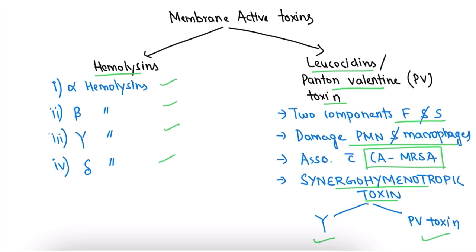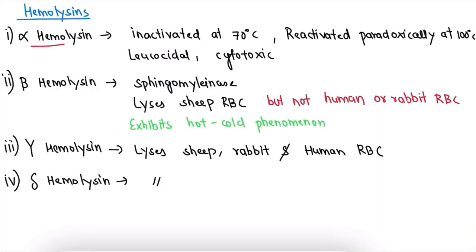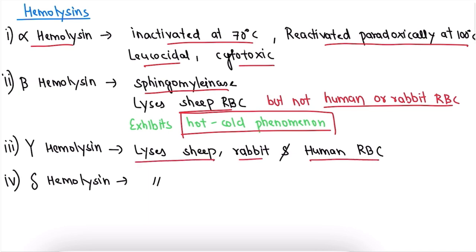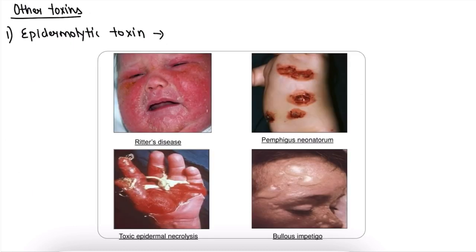Regarding hemolysins: alpha hemolysin is inactivated at 70°C and paradoxically reactivated at 100°C; it is also leukocidal and cytotoxic. Beta hemolysin (sphingomyelinase) is a hydrolytic enzyme that lyses sheep RBCs but not human or rabbit RBCs, and exhibits the hot-cold phenomenon. Gamma and delta hemolysins lyse sheep, rabbit, and human RBCs.